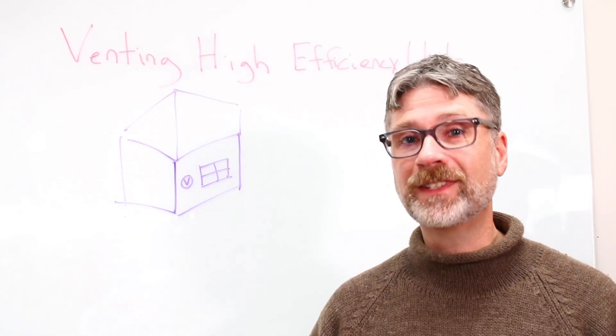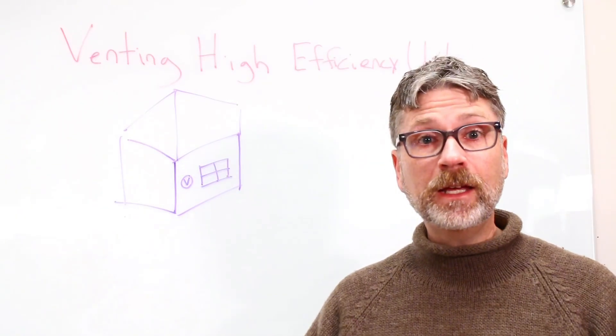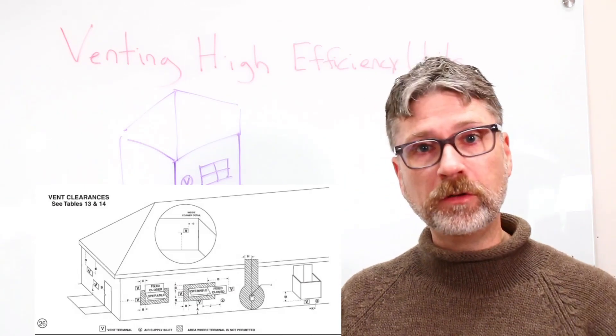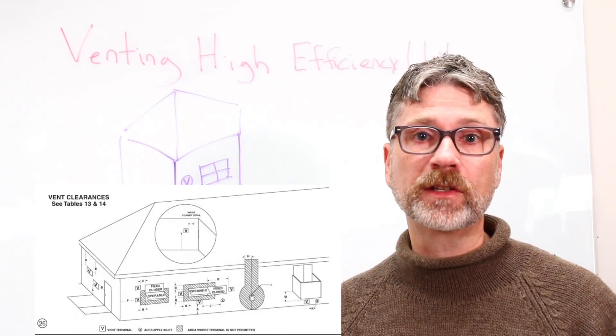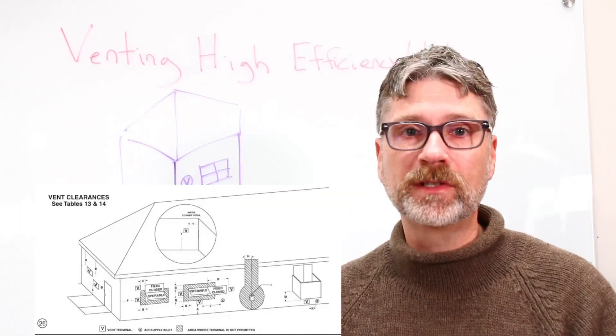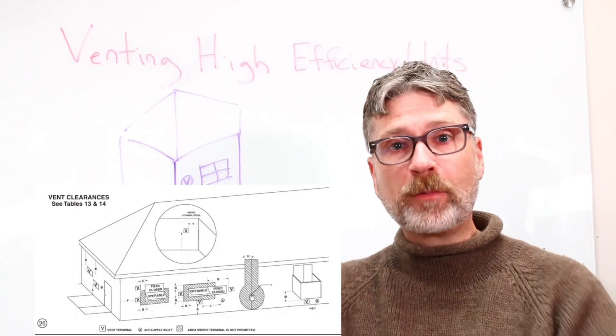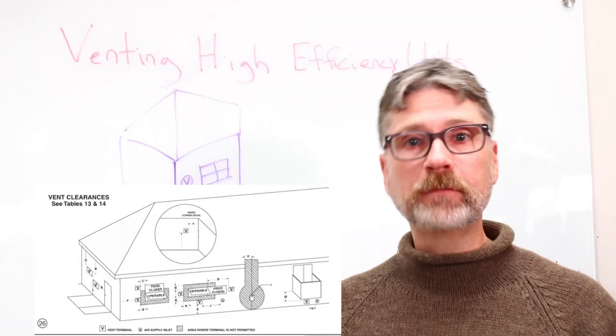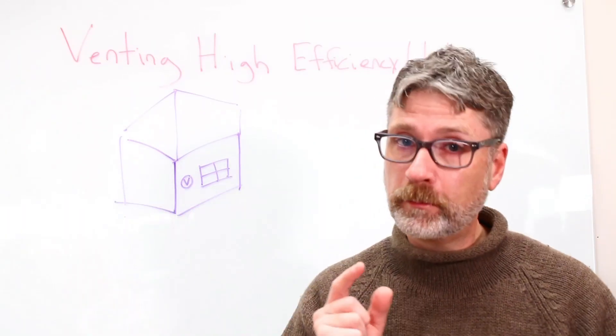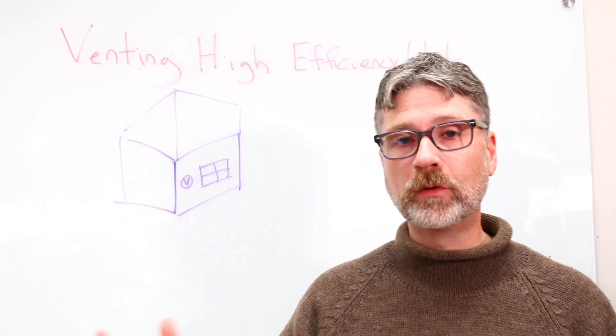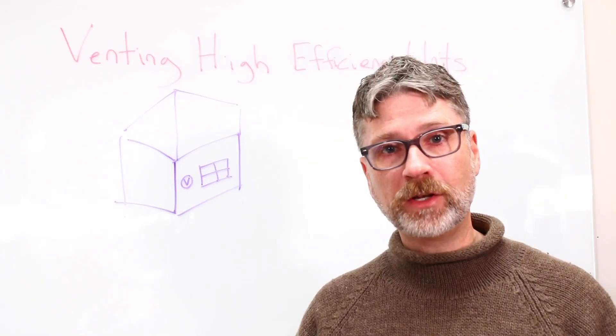Where you terminate your exhaust is a really big deal too. Again, the manufacturer will have a chart in the manual showing you the clearances to different things. And this is the minimum distance to things like, for example, an operable window. An inoperable window, a closed window that doesn't open, well the answer to that is zero. But the U.S. and Canada, for example, will have slightly different rules to different terminations.